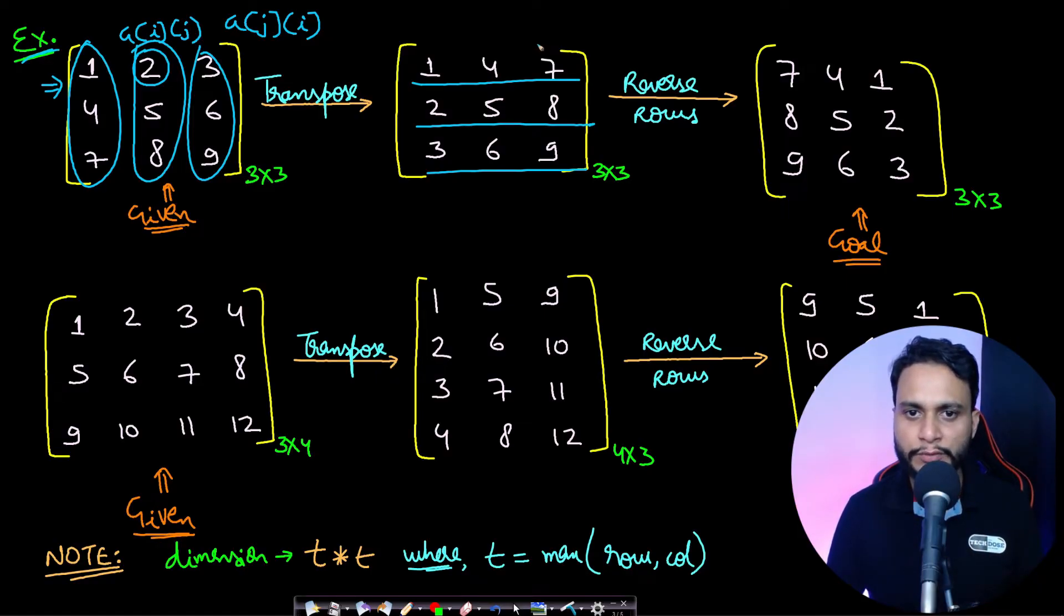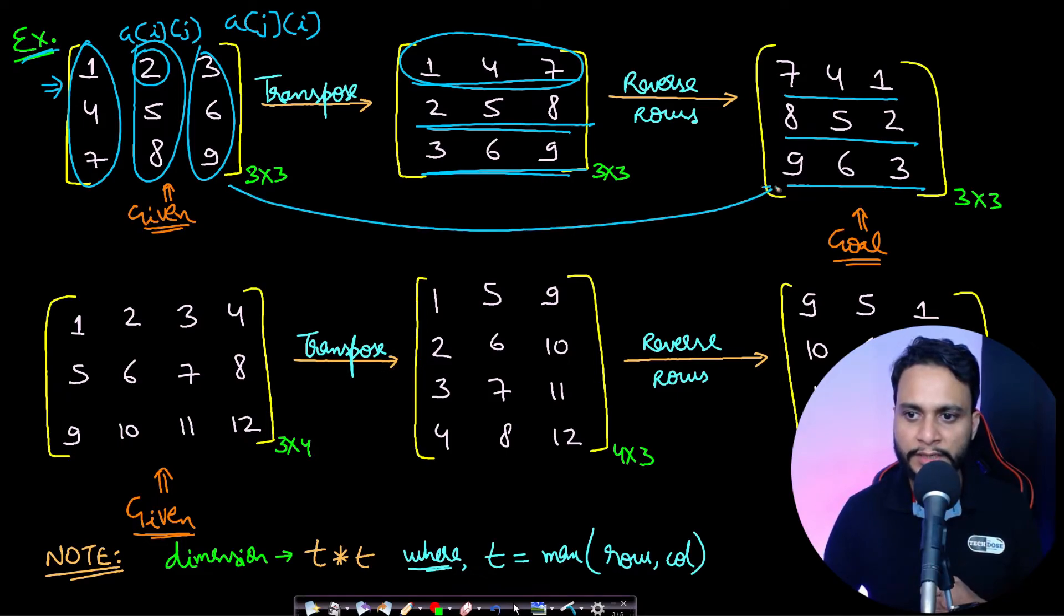If you know how to transpose this, then you just have to reverse all the rows. So if you reverse this row 1-4-7, then this will be 7-4-1. Similarly, 2-5-8 can be reversed to 8-5-2, and 3-6-9 can be reversed to 9-6-3. If you do this, then you have actually rotated your given square matrix to 90 degrees in the clockwise direction. This is what we wanted.